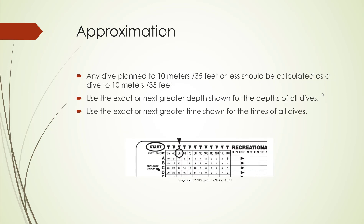While working with the RDP, there are times when you need to round numbers. In these cases, we follow two critical rules. You have to use the exact or next greater depth shown for the depths of all dives, and you have to use the exact or next greater time shown for the times of all dives. This means you will always round up. For example, if you want to calculate something for a depth of 71 feet, looking at the table we have 70 but not 71, so we jump up to 80. Therefore, 71 will be rounded up to 80, not down to 70.